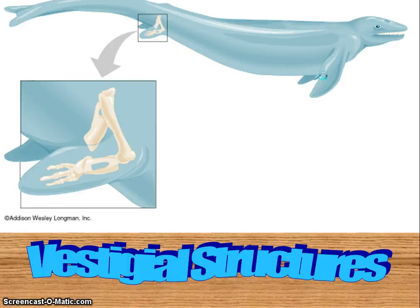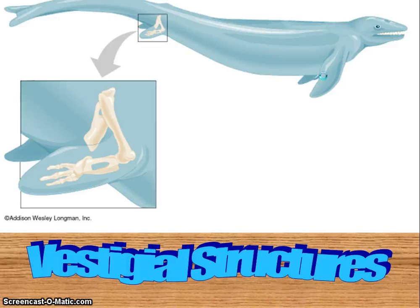A vestigial structure is a structure that we have that we don't use. It may have once had a function, but it's a structure that has no current function. Our appendix is an example. Pig toes — two are shorter and don't touch the ground, and there's no role for them in locomotion. So again, these are structures we have that we don't actually use.